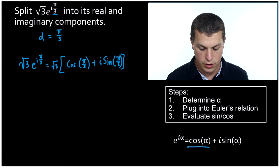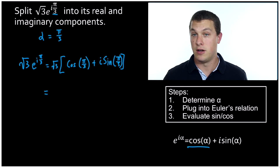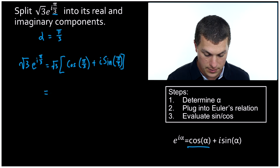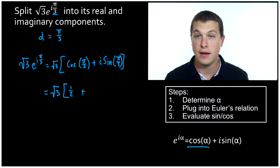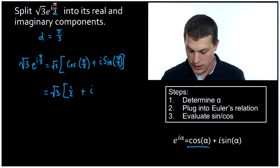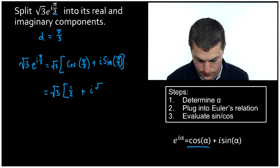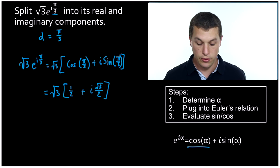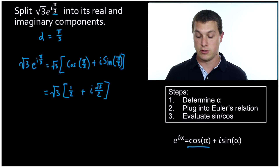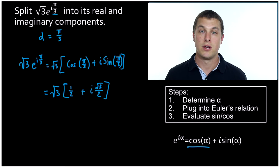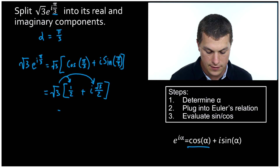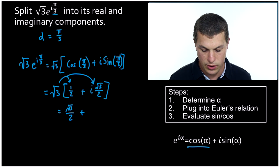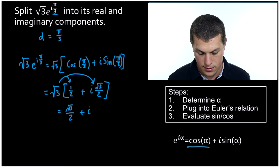Now we resolve cosine and sine of pi over three. You can do this with a calculator, though sometimes it gives decimals when you could have a fraction, so it's nice to look it up in a table. Cosine of pi over three equals one half, and sine of pi over three is square root of three over two. So we have one half plus i times square root of three over two. Now we distribute the square root of three: that gives us square root of three over two, plus — since square root of three times square root of three is three — i times three over two.